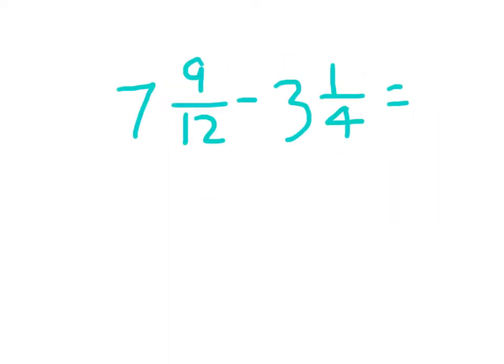Here I have seven and nine-twelfths minus three and one-fourth. Are the denominators the same? No they're not, so I need to find a common denominator. Listing multiples of twelve: twelve is there, and for four: four, eight, then twelve. Twelve is a common multiple of those two denominators, so I can just use twelve.